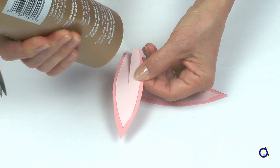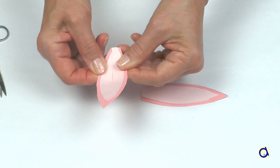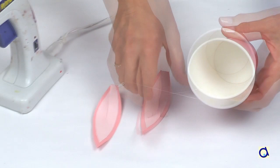To give volume to the ear, make a cut in the middle of the ear starting from the bottom. Put white glue on one half and glue it to the other side.